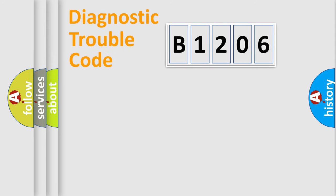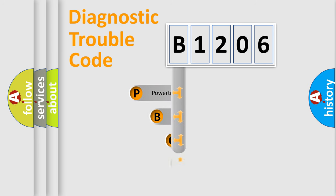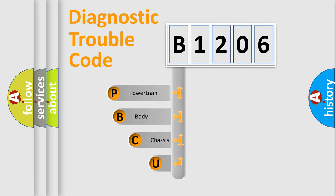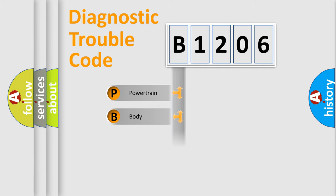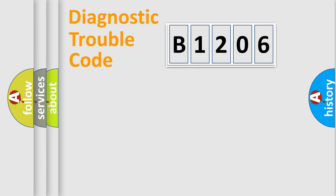Let's do this. First, let's look at the history of diagnostic fault code composition according to the OBD2 protocol, which is unified for all automakers since 2000. We divide the electric system of an automobile into four basic units: Powertrain, Body, Chassis, and Network.